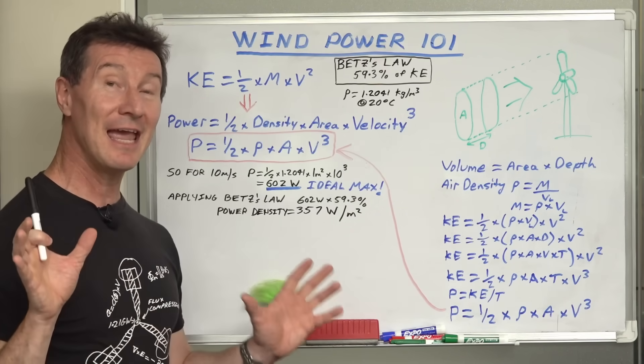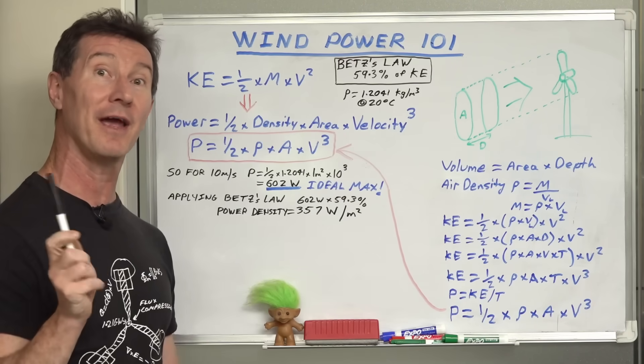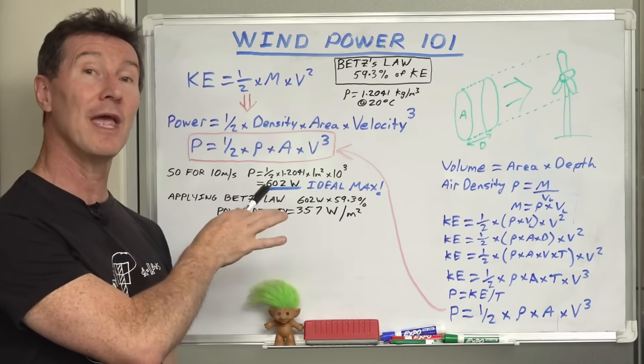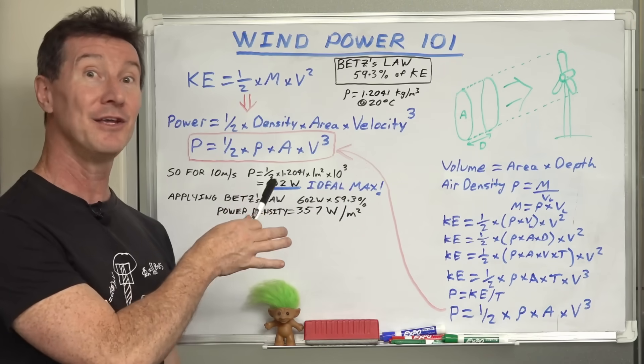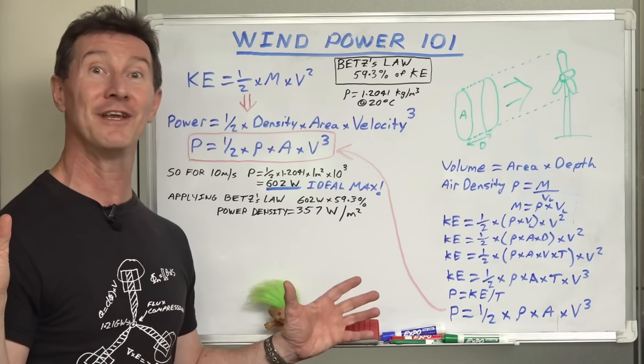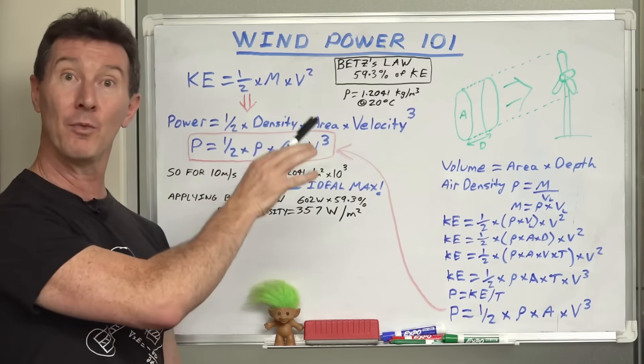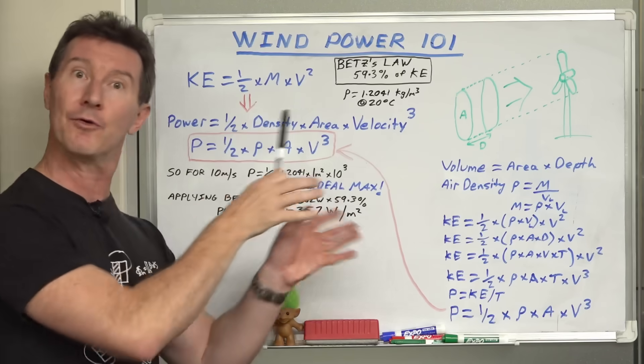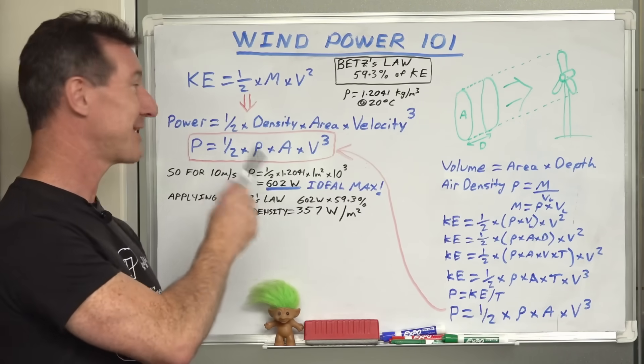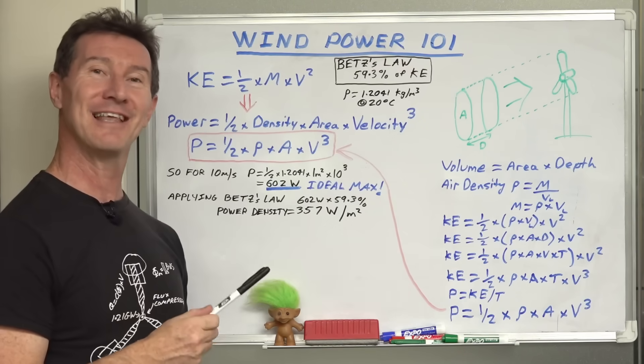So anytime you see any marketing claim whatsoever for any sort of wind turbine that can get greater than 602 watts per square meter area, you know they're full of crap, because that would require over unity, getting more power out than what you put in from the wind. In this case, you're not putting it in, the wind's already there, you're just extracting from the wind. There's no way you can possibly get more than 602 watts per square meter at that particular air density.